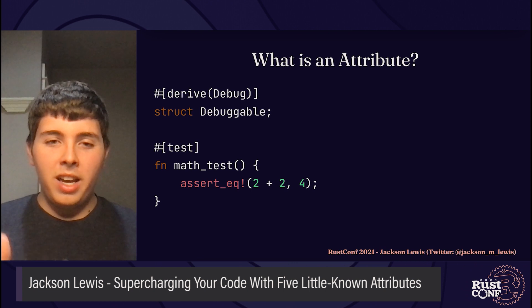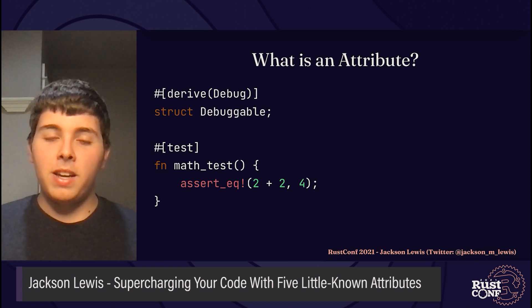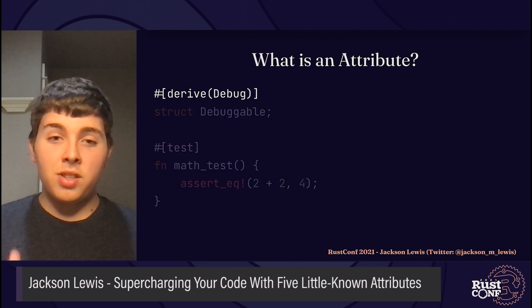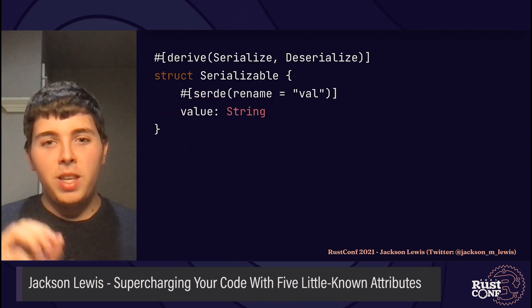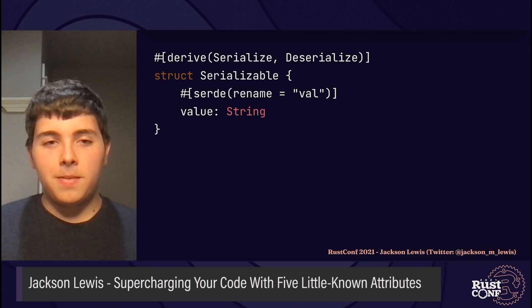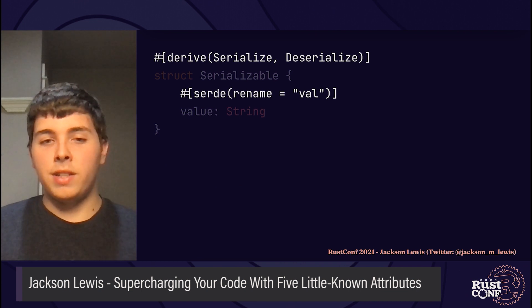For those of you who don't know, an attribute is like a tag that you can put on a function, struct, or statement that tells the compiler to do something special. If you've ever derived a trait for a struct, then you've used an attribute from the standard library. Or you might have used the test attribute before to write a unit test. You can also define your own attributes and import them from third-party crates. For example, Serde is a popular third-party attribute that will automatically derive functions to manage the serialization and deserialization of your structs.